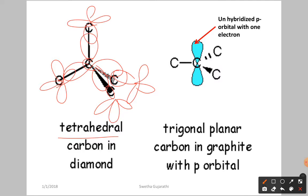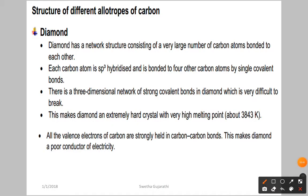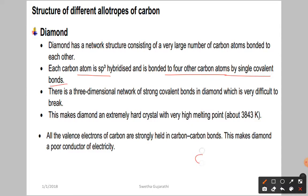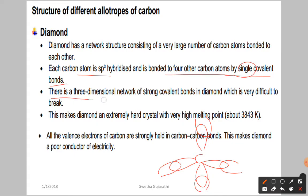In diamond, the carbon atoms form a big network structure. Each carbon atom is sp3 hybridized and bonded to four other carbon atoms by single bonds. The sp3 hybrid orbitals overlap with one another, forming a three-dimensional network of strong covalent bonds.